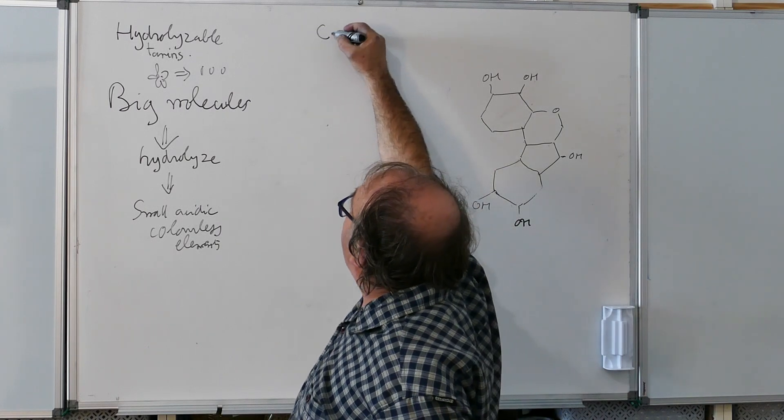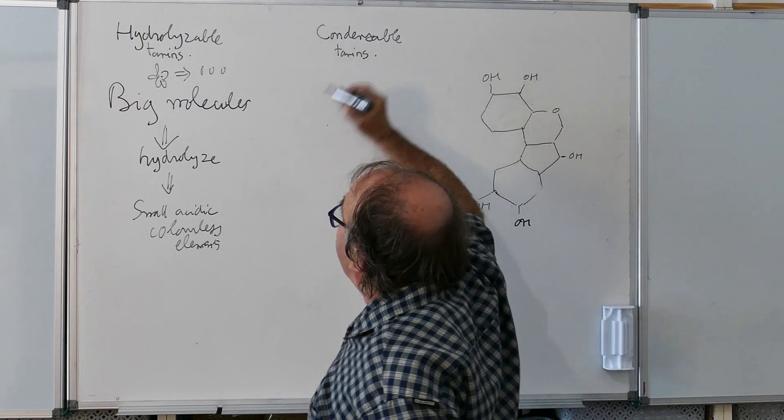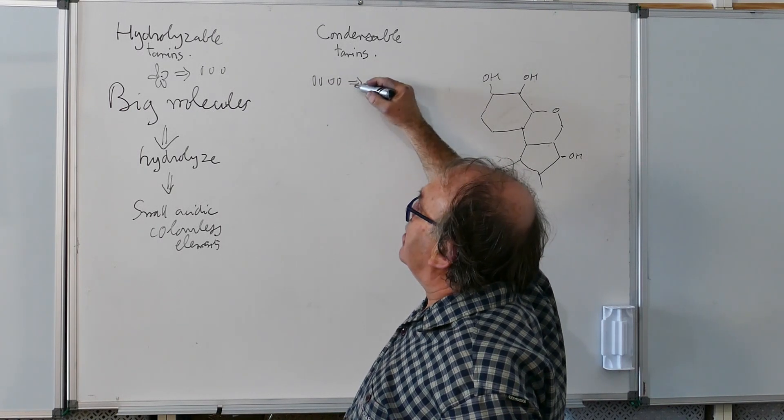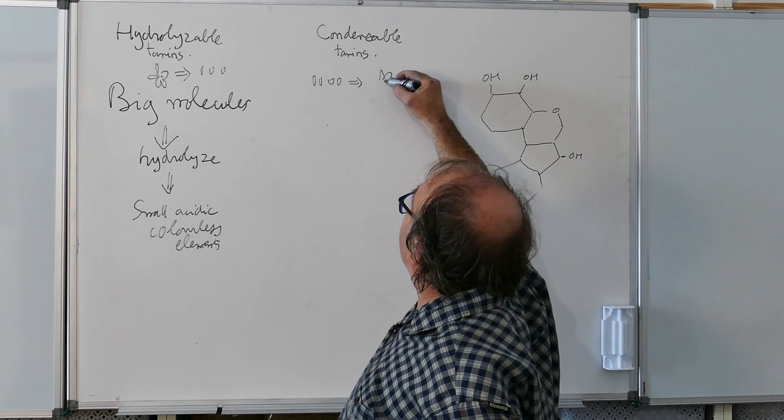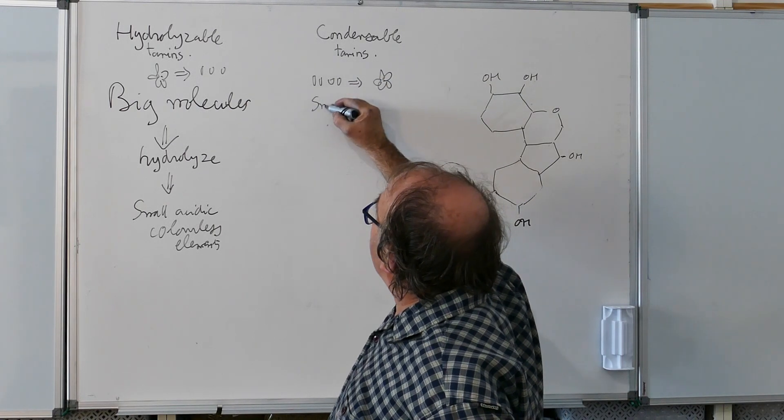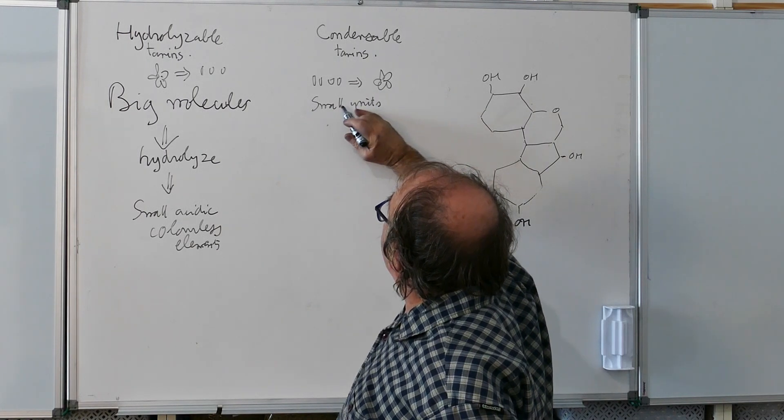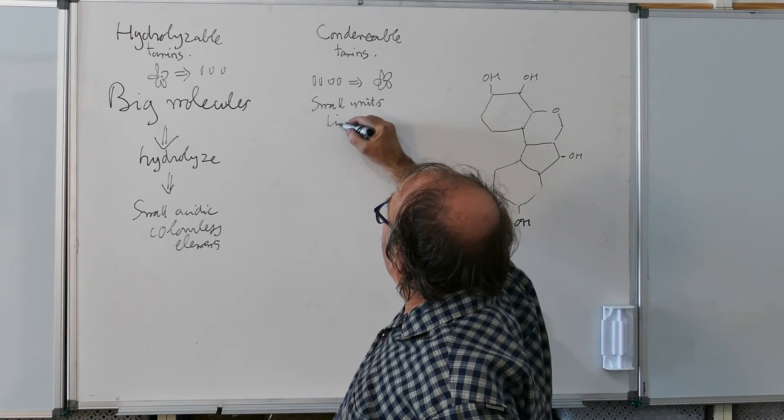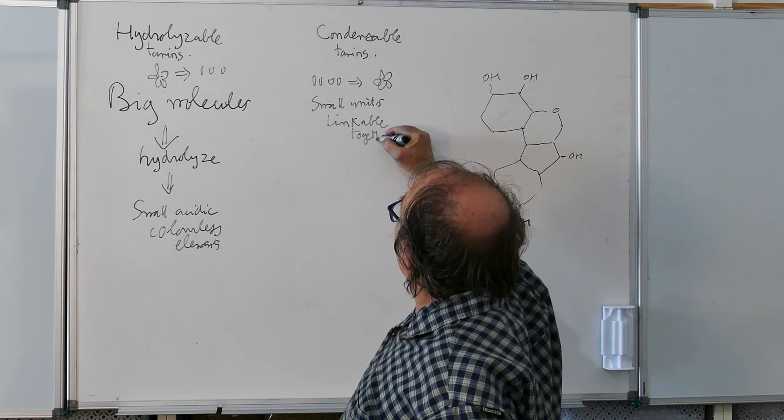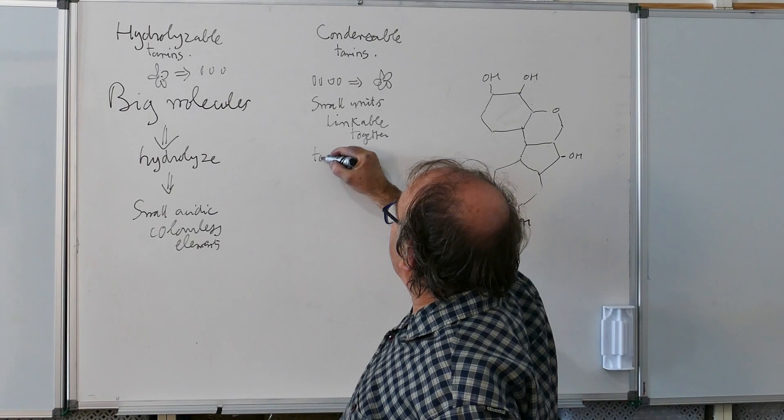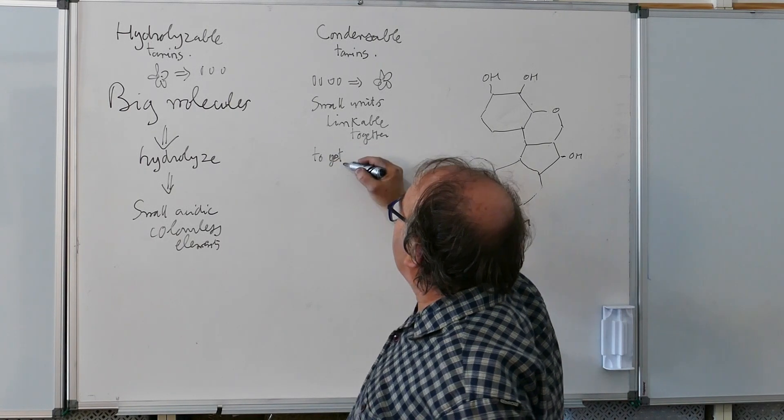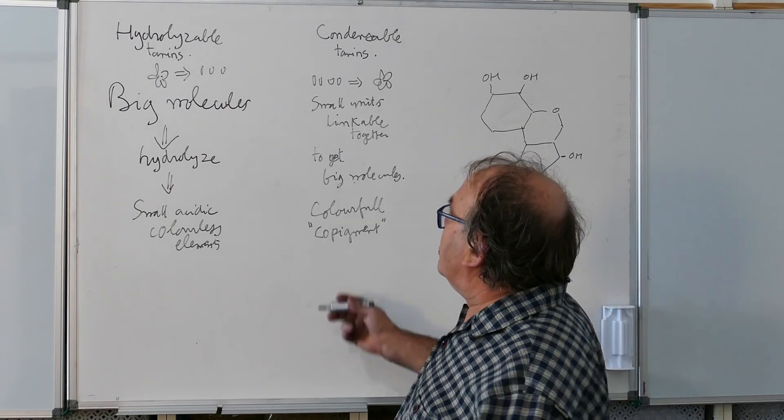The other ones, we call it condensable tannins. They are small units that can be linked together in order to make a big structure. So, they are small units that are linkable together to get molecules with very high molecular weight, big thing.